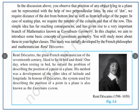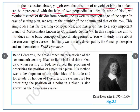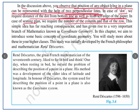From this discussion we observe that the position of any object lying in a plane can be represented with the help of two perpendicular lines. In the dot example we required the distance from the bottom line and the left edge. In the classroom example we required the column number and the row number. This simple idea has far-reaching consequences and has given rise to an important branch of mathematics known as coordinate geometry.